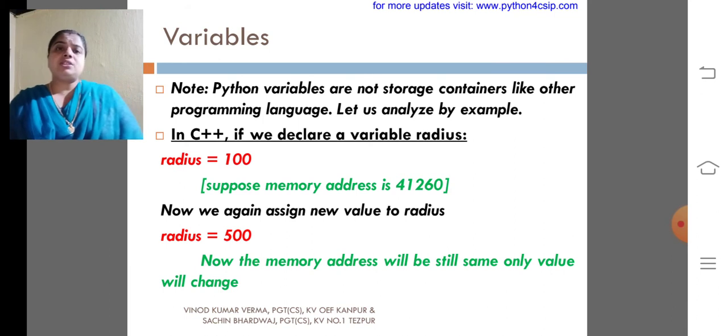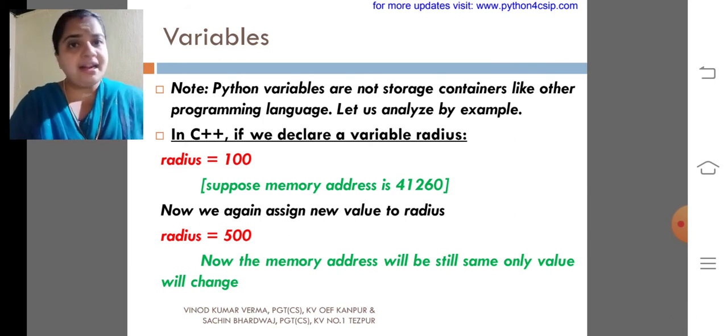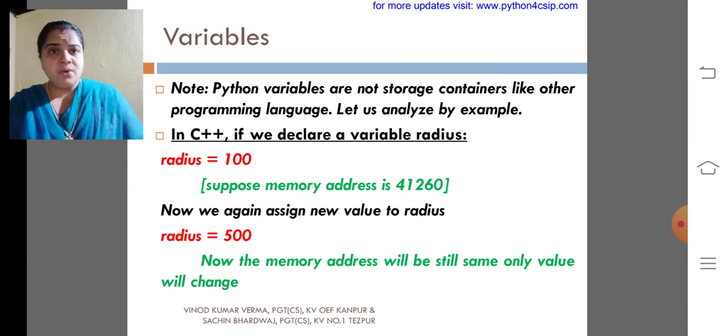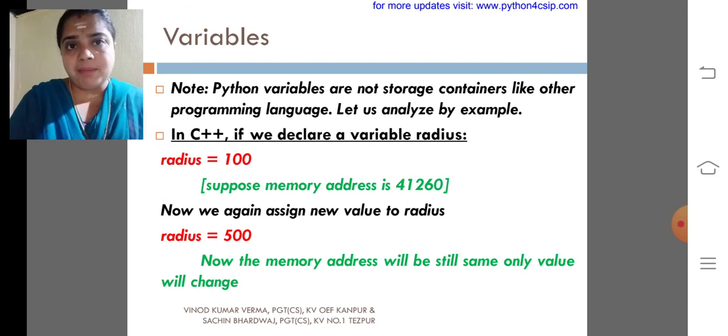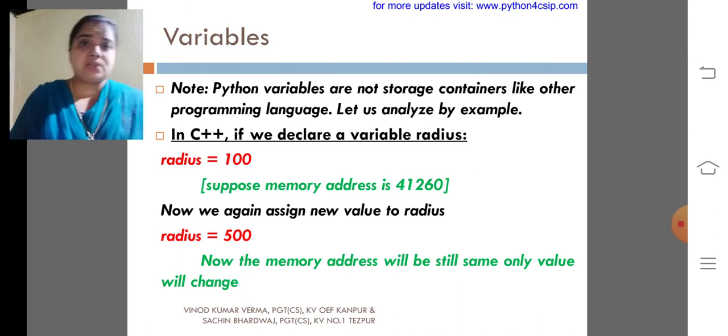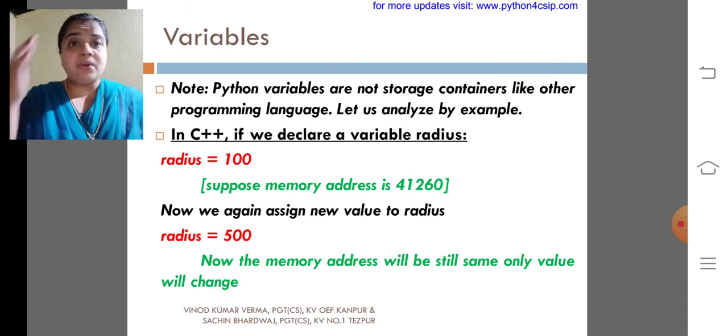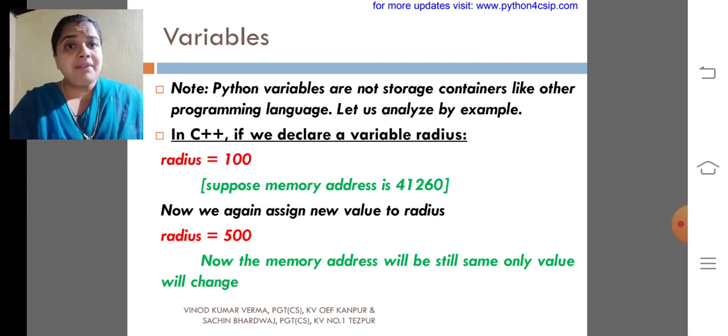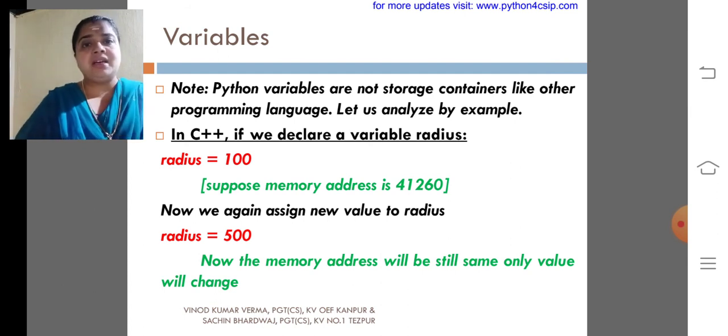That is, if we are storing a radius value 100, assigning to a variable called radius, the interpreter or compiler will store the value in a particular memory address. We already studied, each and every value is stored in a memory address. It is difficult to recollect the memory address. That is why we are using a variable. If we are using phone numbers, we are saving with the name. Why? It is easy to recollect, easy to use. But it is difficult to remember the phone numbers. Similar way, the variable storage is also like that.